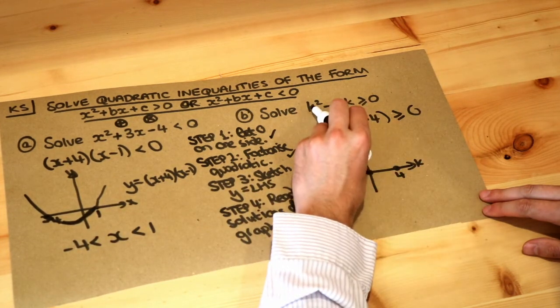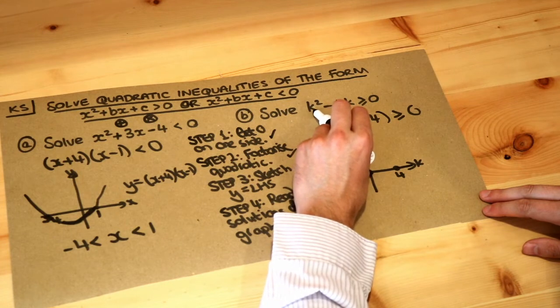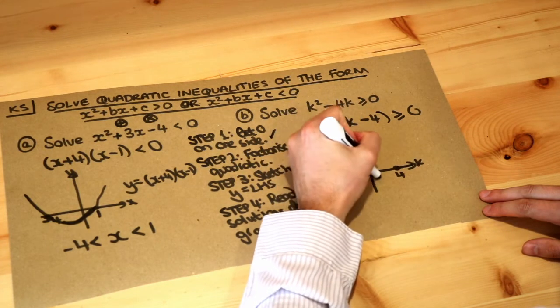And again it's a positive quadratic, it's positive one k squared. So it's going to look like that.